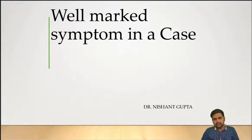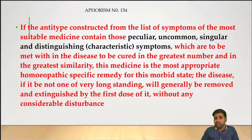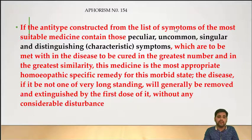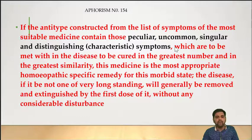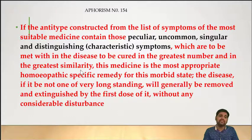So I want to discuss with you all the theory of well-marked symptoms in a case. If you look at the definition, it is given in Aphorism number 154. The major definition states that the most suitable medicine contains — and the words given are — peculiar, uncommon, singular, and distinguished symptoms. These characteristic symptoms are to be met within the disease to be cured in the greatest number and in the greatest similarity. That is what Hahnemann wrote in Aphorism 154.